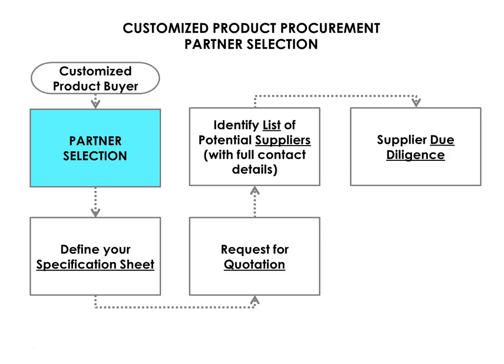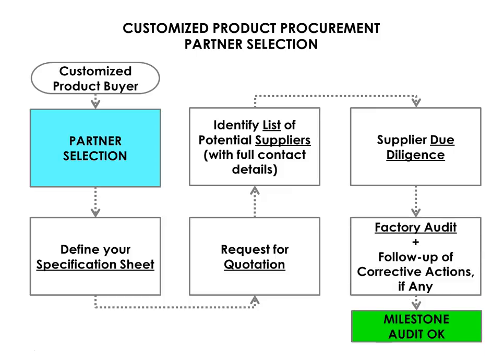After you have created a shortlist, you need to carry out your due diligence on those suppliers to determine the best you can their legitimacy. This should be followed up with a factory or supplier audit, which will provide a detailed report and findings. If you are happy with the results, you can feel comfortable that you have found a suitable manufacturing partner.